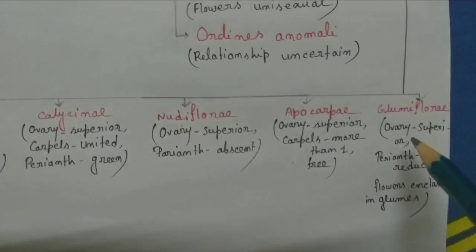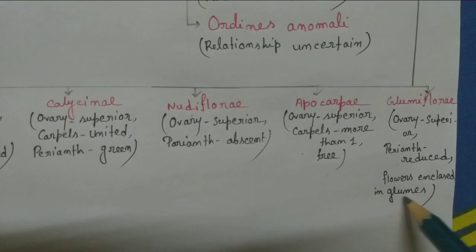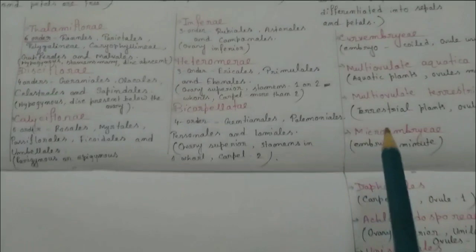The last one is Glumaceae, where ovary is superior, perianth reduced, and flower enclosed in glumes. Thus the name Glumaceae.